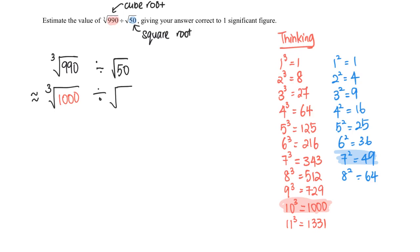So I found the closest number that is very close to 50: 49. And with that we will be able to get cube root of 1000 is 10, square root of 49 is 7, and this will give me a value of...